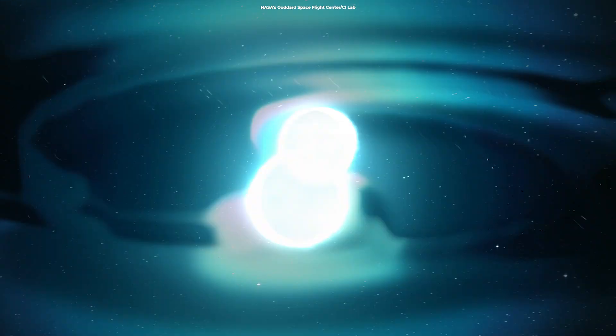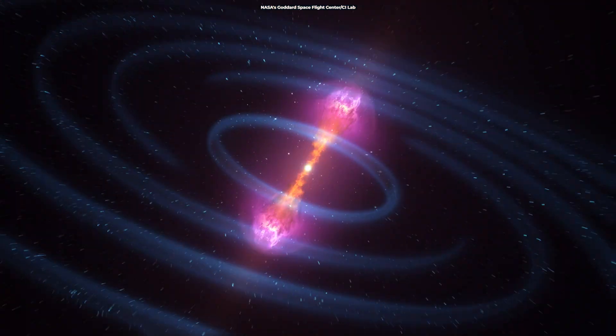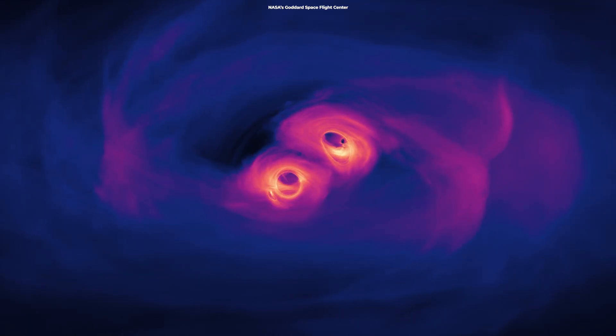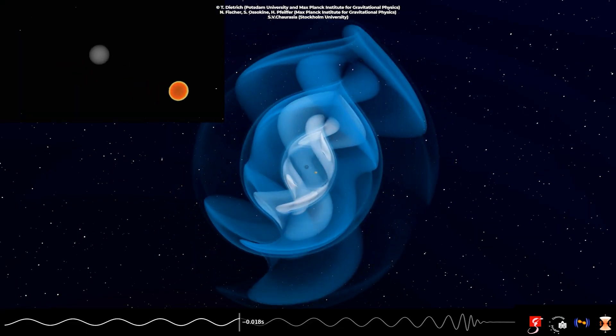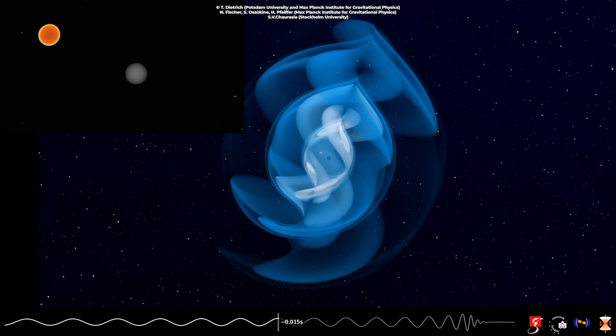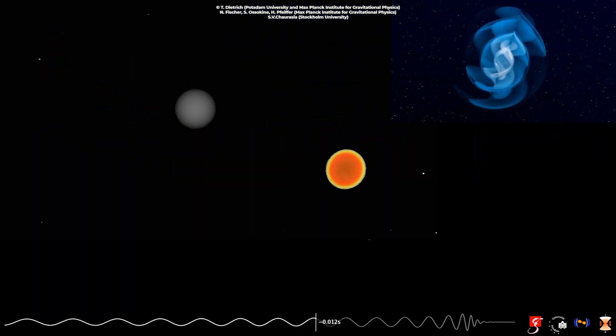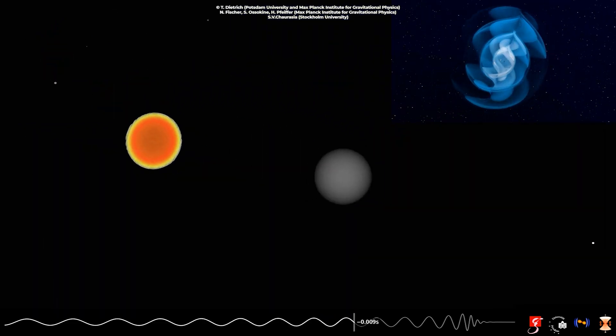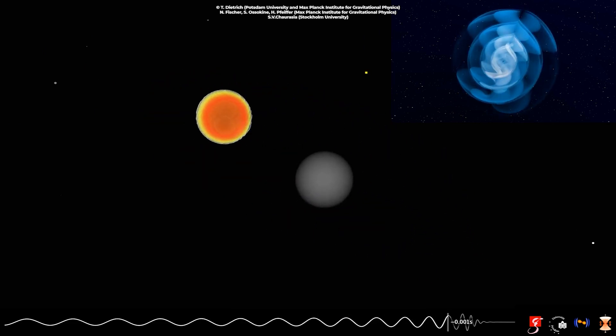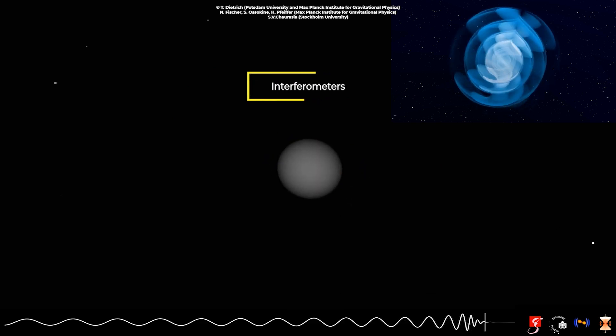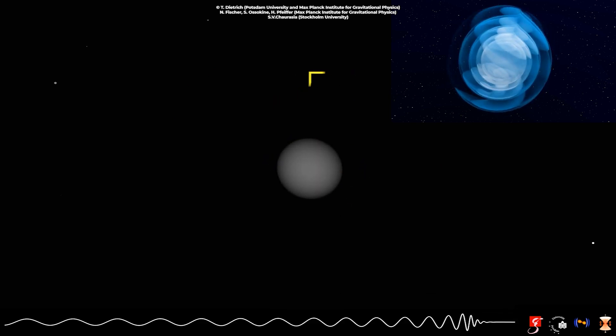Scientists have observed neutron stars colliding with one another and black holes clashing, but they have never observed a black hole devouring a neutron star. They felt it was feasible, but there was little proof until gravitational wave detectors, known as interferometers, offered strong evidence.